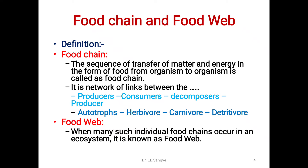Definition of food web: when many food chains come together and form a complex system, that complex system is known as a food web. Or when many such individual food chains occur in an ecosystem, it is known as a food web.